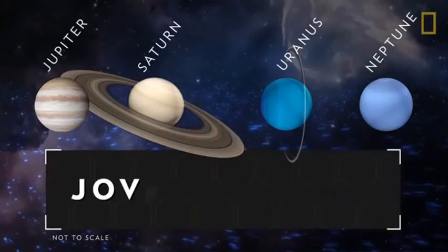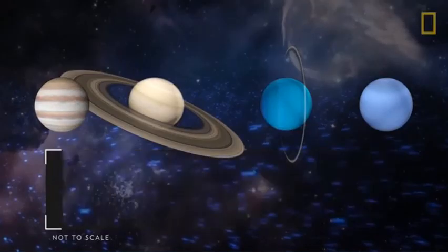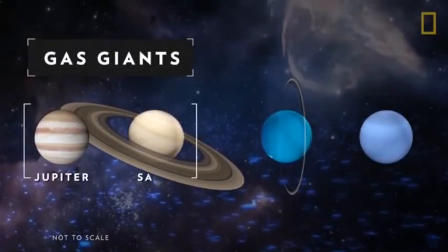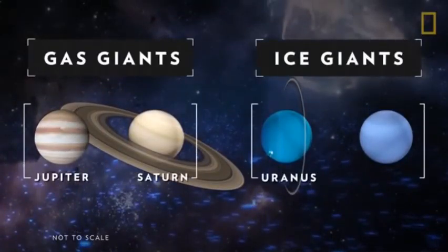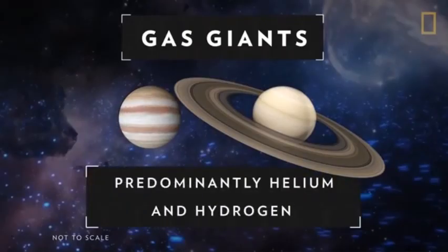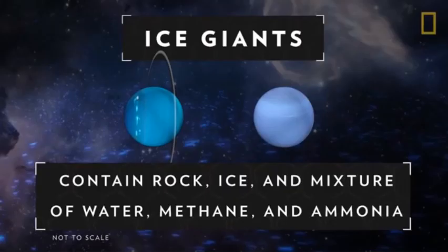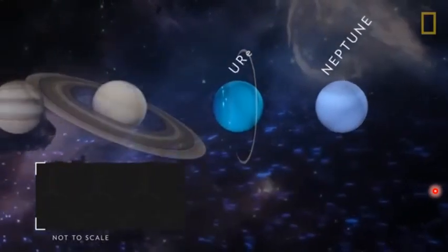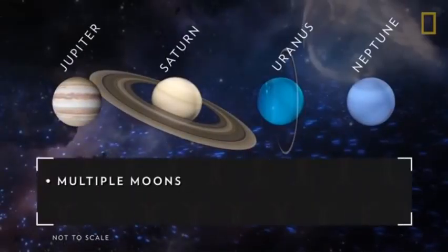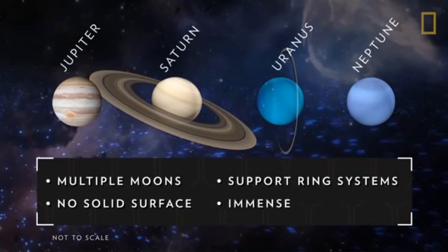How about the Jovian planets of the outer solar system? The Jovian planets include gas giants Jupiter and Saturn, and ice giants Uranus and Neptune. The gas giants are predominantly made of helium and hydrogen, and the ice giants also contain rock, ice, and a liquid mixture of water, methane, and ammonia. All four Jovian planets have multiple moons, sport ring systems, have no solid surface, and are immense.